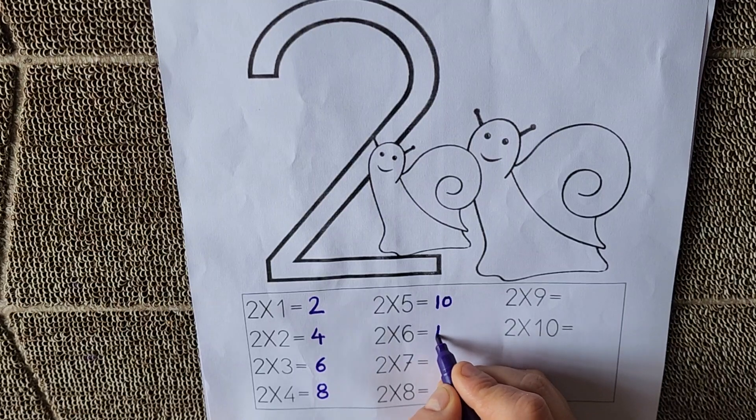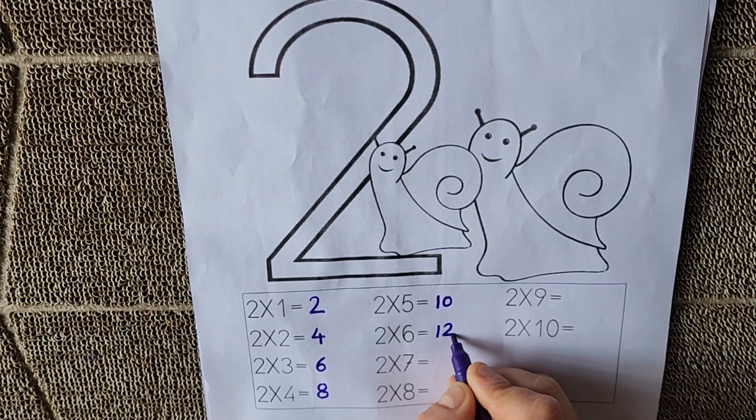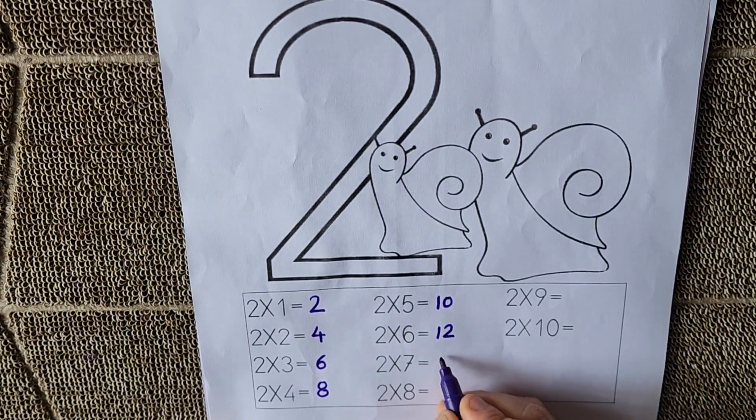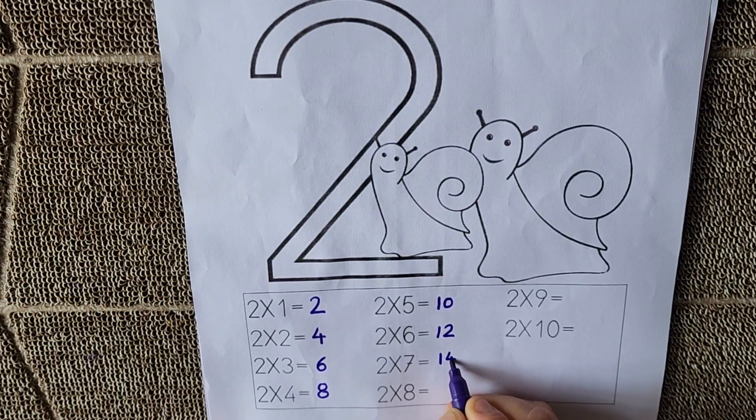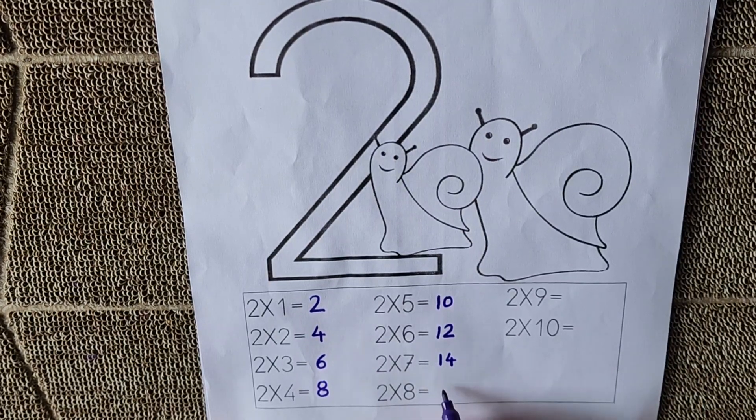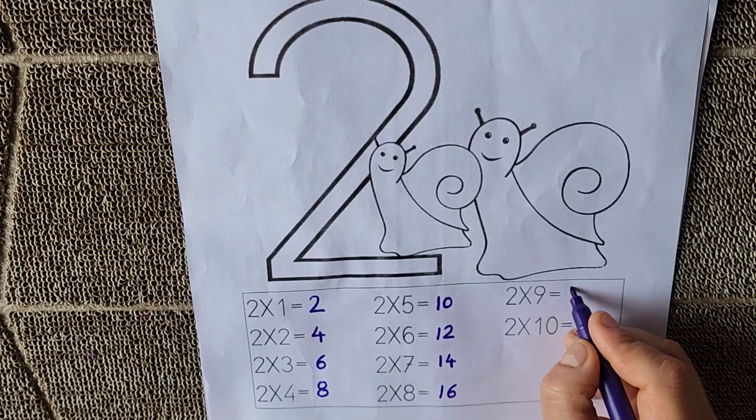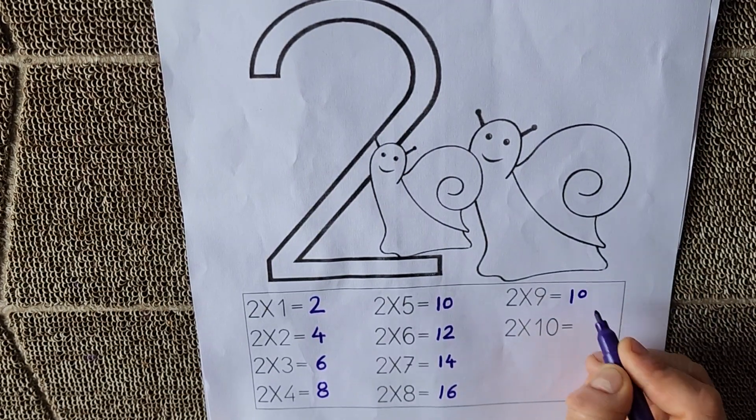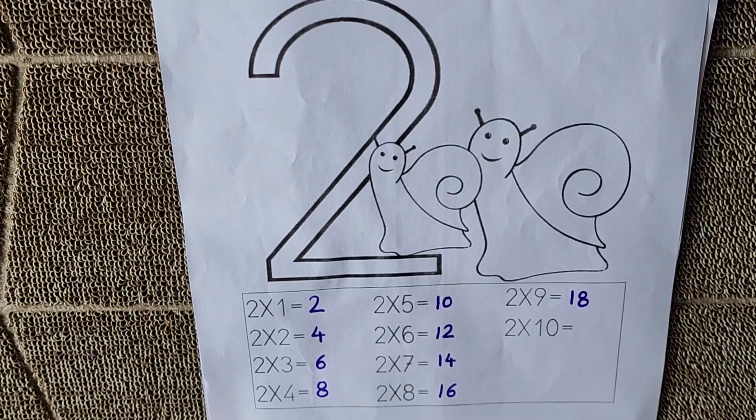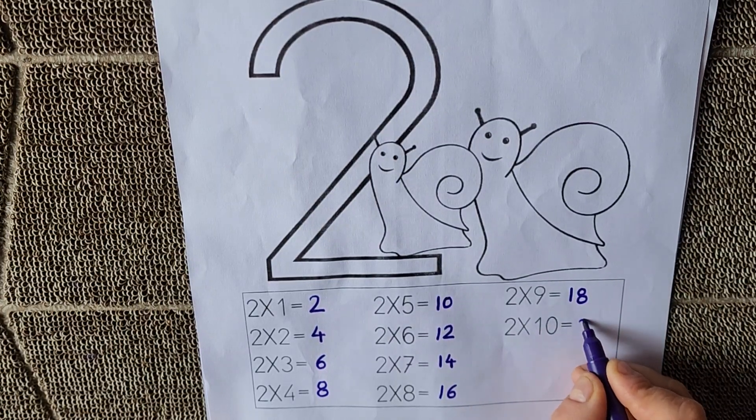2 6s are 12. 2 7s are 14. 2 8s are 16. 2 9s are 18. And 2 10s are 20.